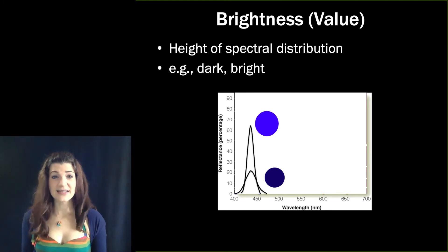One is reflecting lots of light, that is the taller peak, the bright blue, and the darker blue is reflecting less.